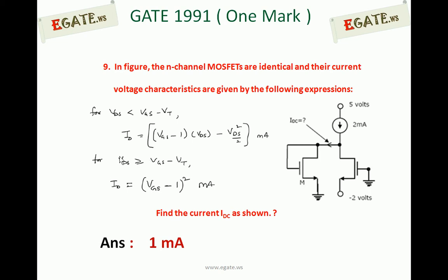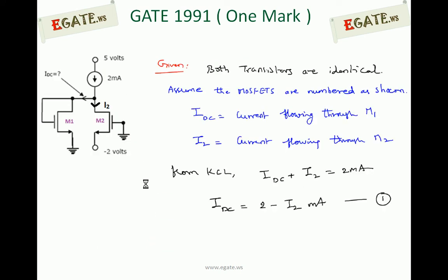What is given tells us which drain current equation to use whenever the transistor is in the linear, active, or triode region, and whenever it is in the saturation or constant current region. We simply need to find out which region the transistor is in and accordingly use the correct current equation. Both transistors are identical — M1 is the left-hand side transistor and M2 is the right-hand side transistor.